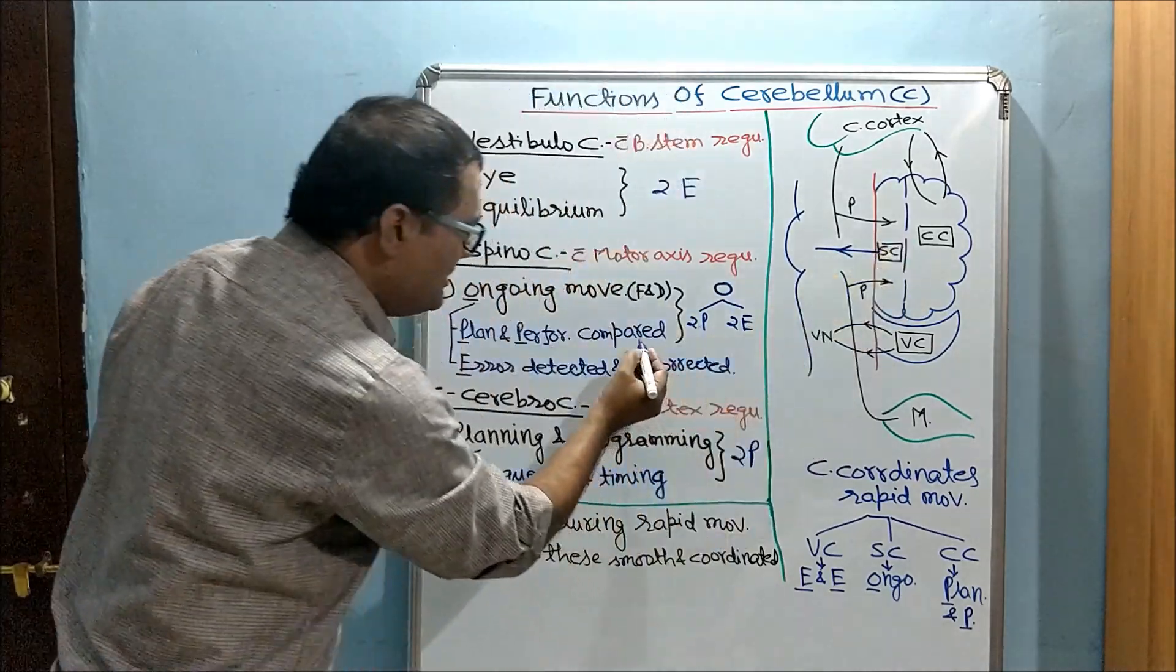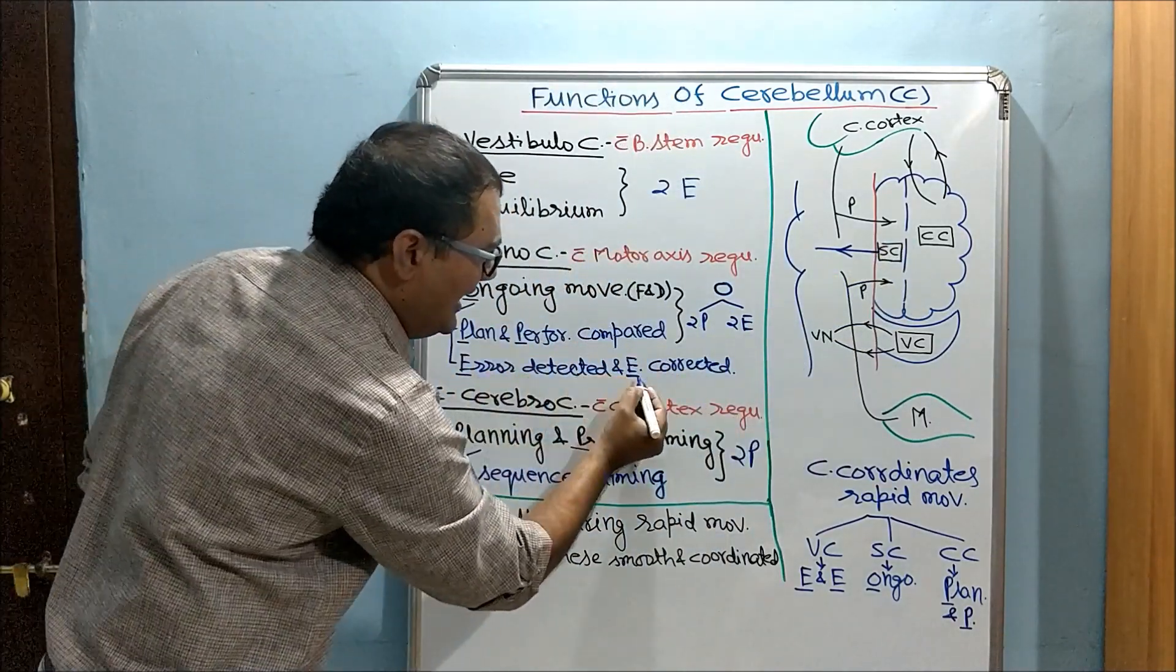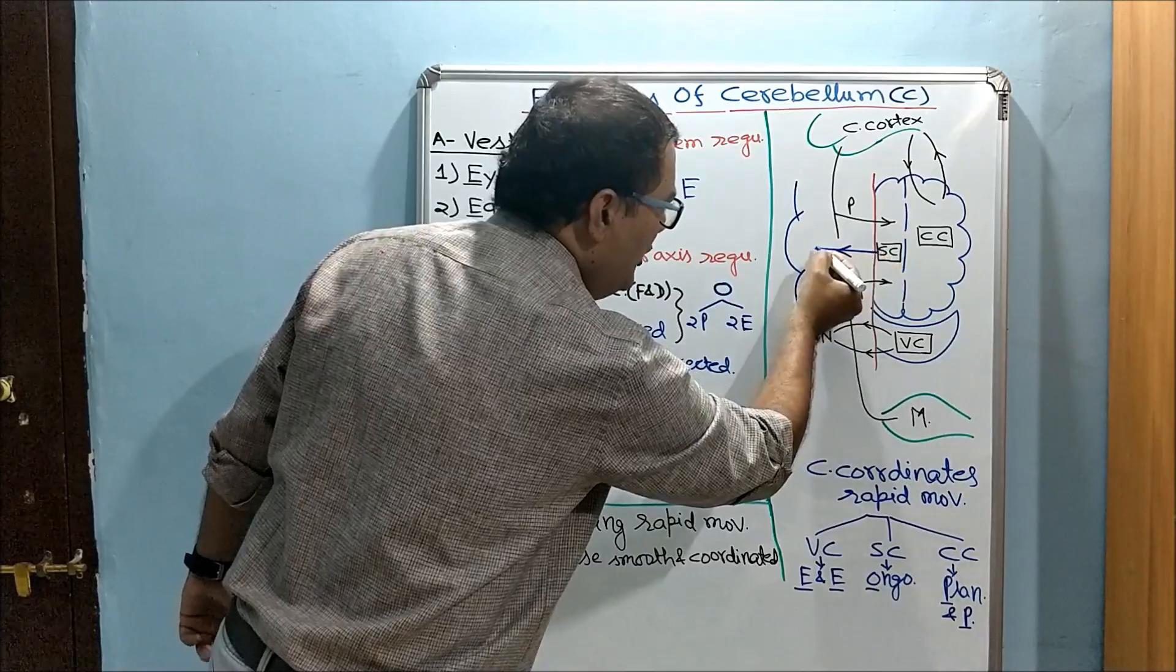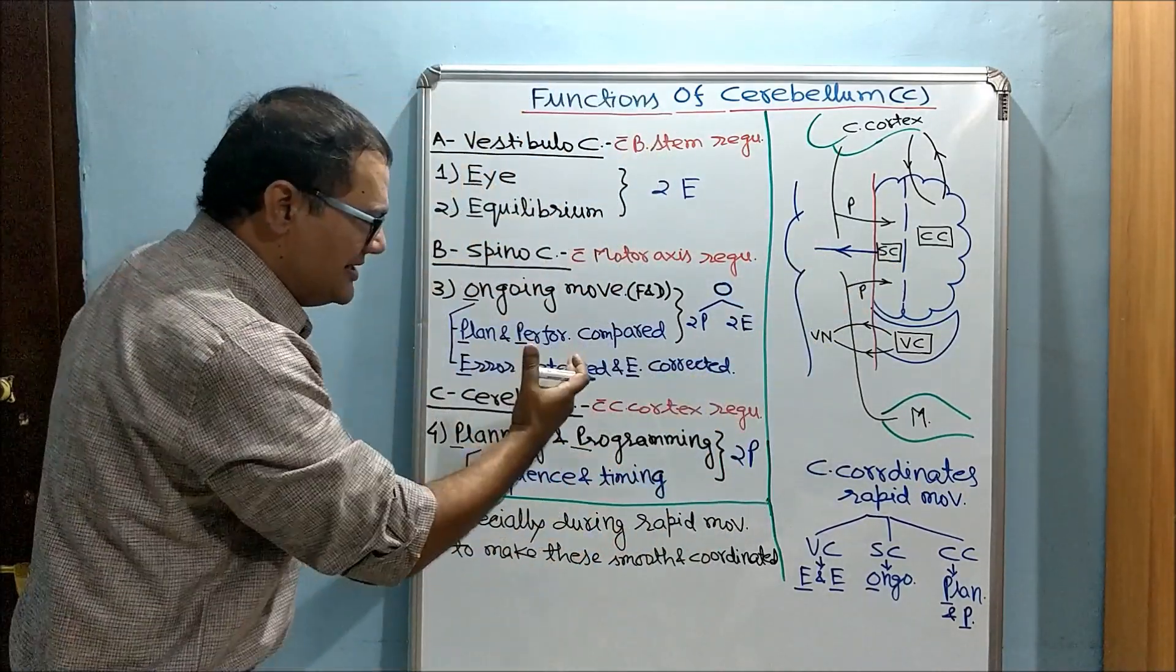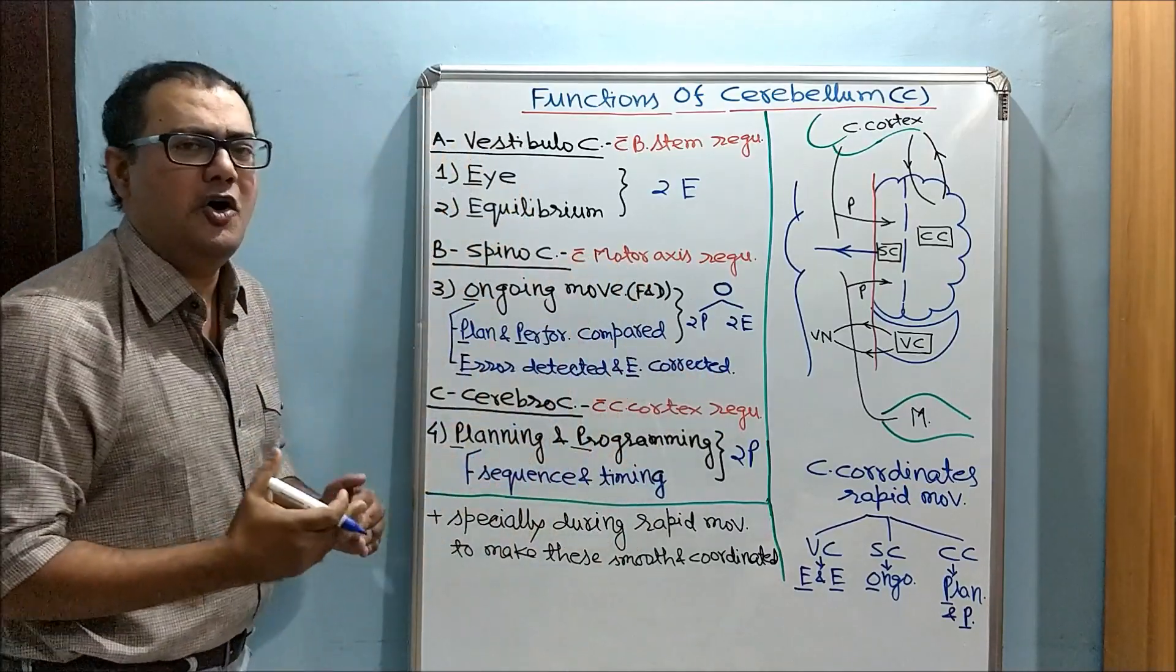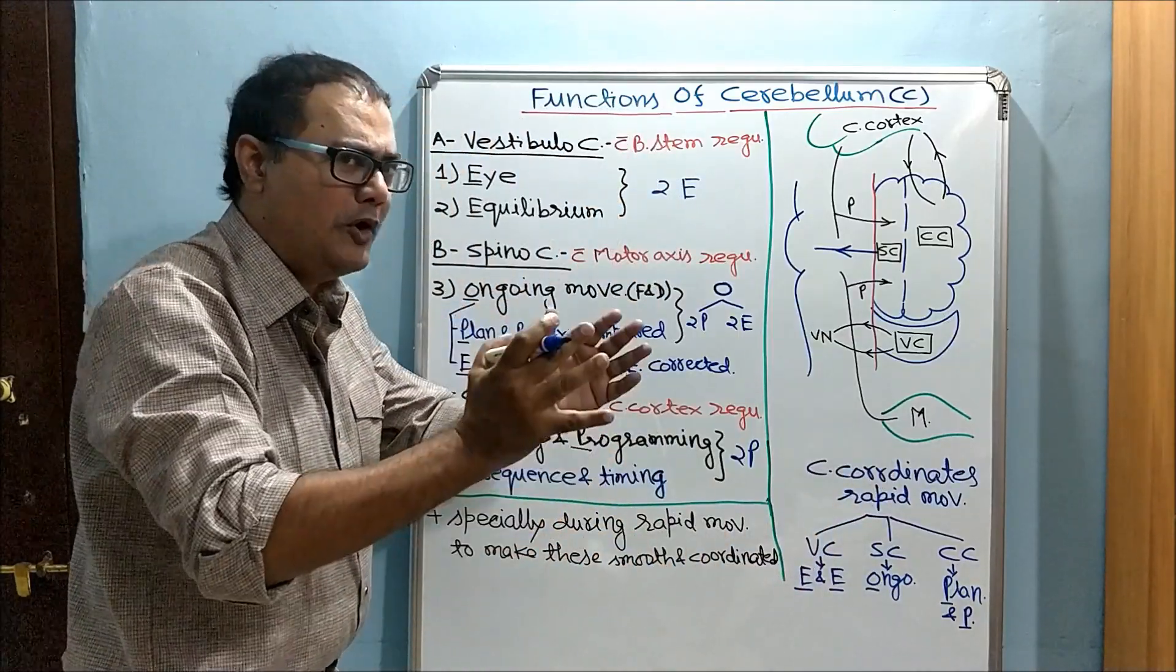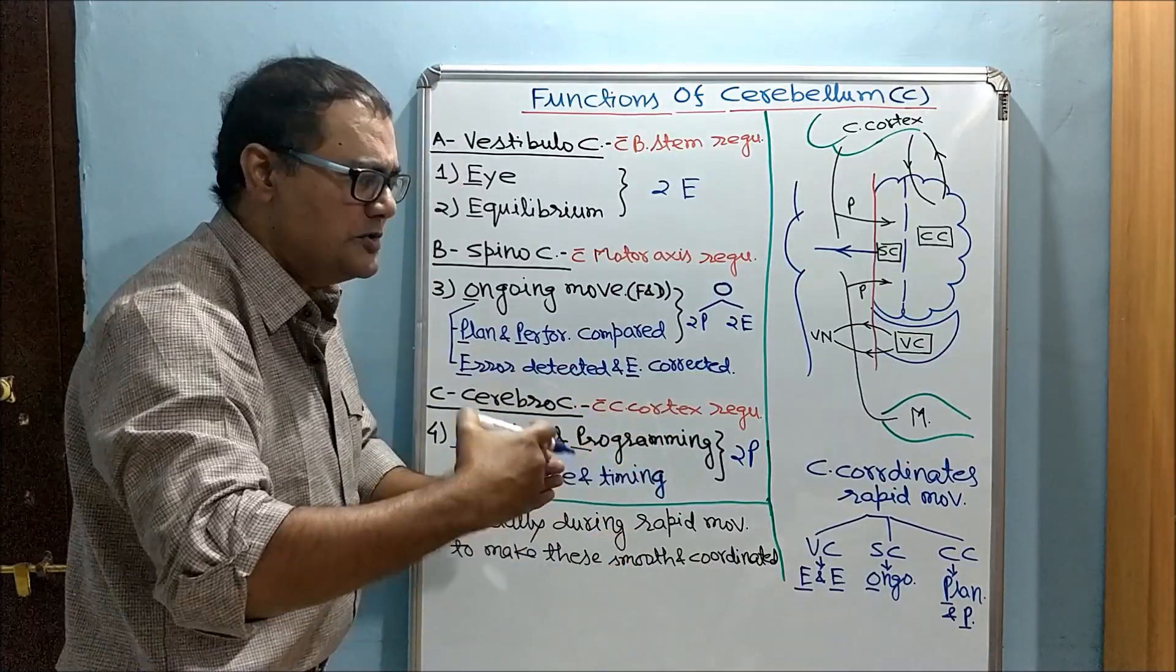Spinocerebellum compares both, detects error, and corrects error - two E's. And these error-correcting signals are going to motor pathway and error is corrected. So this is comparator function and error-detecting circuit. It regulates ongoing motor activity. So spinocerebellum makes rapid motor activity coordinated during the motor activity.